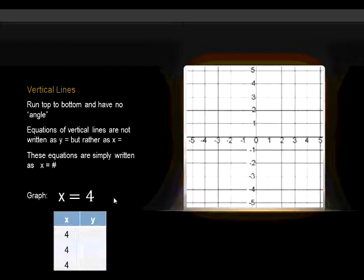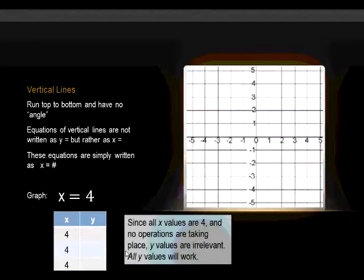So for this one, x equals four. The x value is four. I can't plug in two; x has to be four. So for every single one of these, you get an input of four. Since all x values are four and no operations are taking place, the y values are irrelevant. That's why you don't see a y value in that. So all y values will work. It doesn't matter what you pick for y; x will always be four.